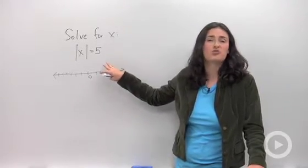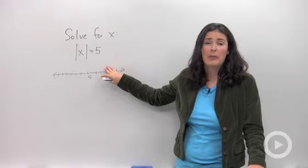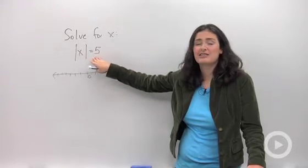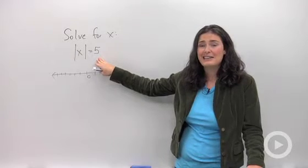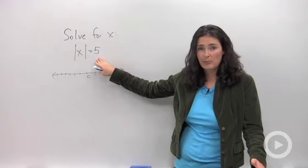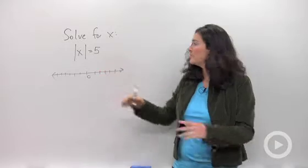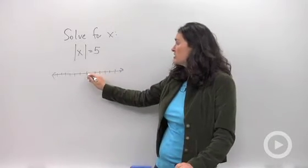So this is just a really basic problem that will help you remember the concept. If the absolute value of x equals 5, what that means is that x is whatever number is 5 away from zero. So I drew a little picture. Here's zero.